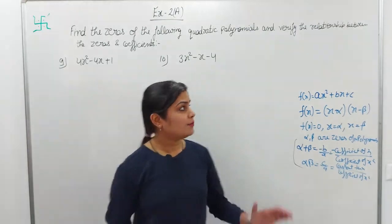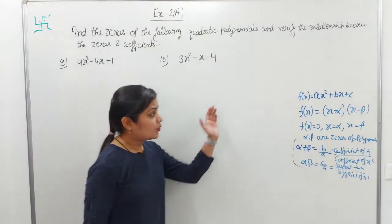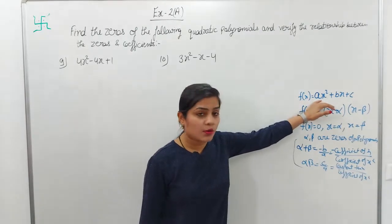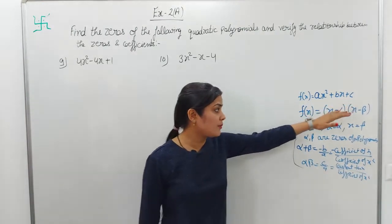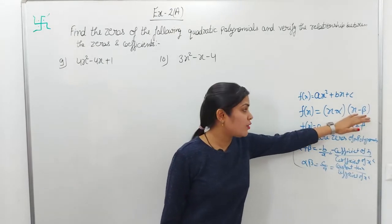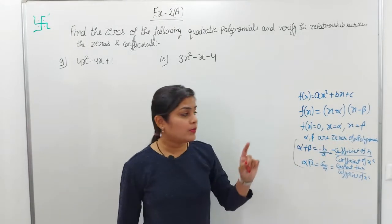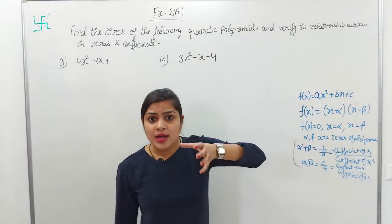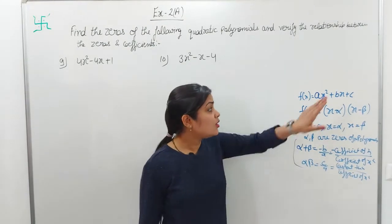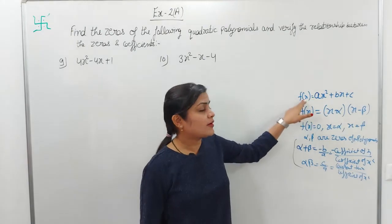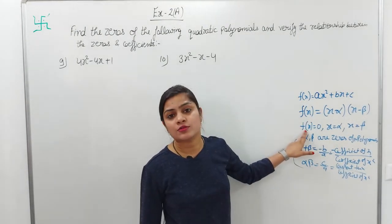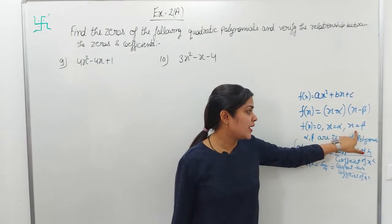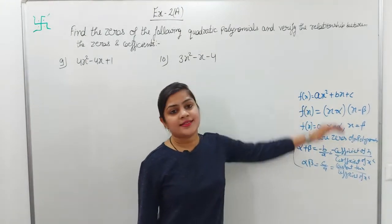So guys, we will solve question number 9 and 10. Question number 9 — as I explained in questions 1 and 2, the equation is a quadratic polynomial of the form ax² + bx + c. If you have the zeros of the polynomial, their values will be alpha and beta. When you put these values in the equation, your function's value is zero — that is, f(x) = 0 for x = alpha and x = beta.